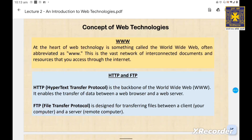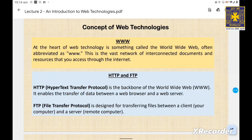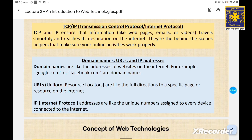Whenever you browse the internet, you are exploring different parts of the huge World Wide Web. When you type a web address into your browser, you are using a series of protocols to request and receive information from a remote server. HTTP, or Hypertext Transfer Protocol, is like the language spoken between your browser and the server, while FTP, or File Transfer Protocol, is used for transferring files. In summary, HTTP helps us access web pages while FTP facilitates file transfer.